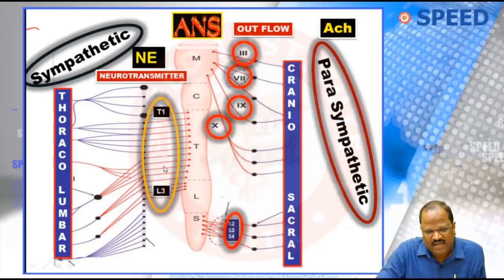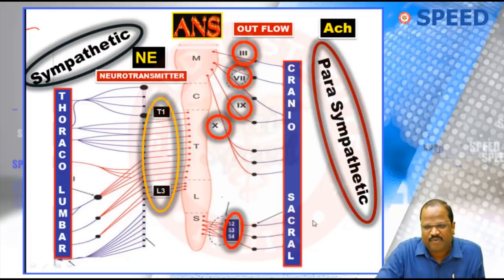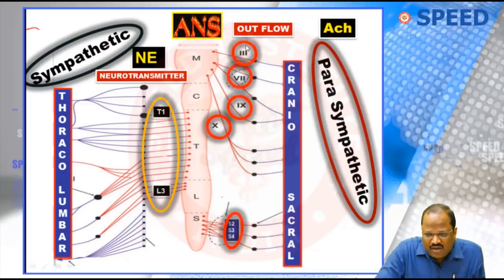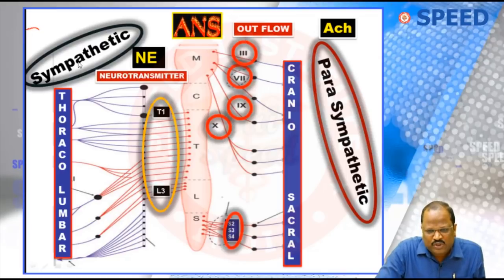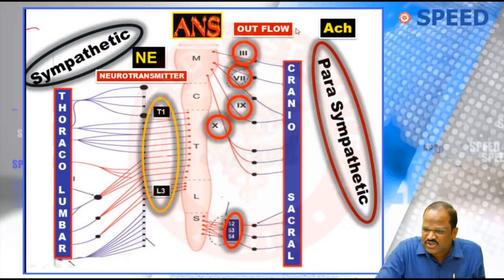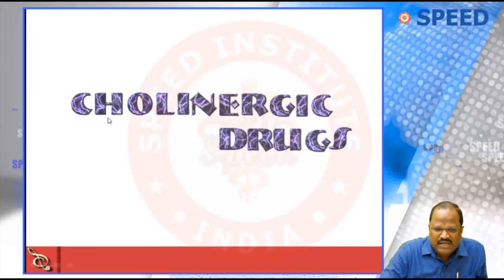The take-home message from this: the most important question — what are all the cranial nerves having parasympathetic activity? 3, 7, 9, and 10. Very important. Once you know this much, the next important point: we know acetylcholine is the neurotransmitter of the parasympathetic system, so today we are going to discuss my first topic called cholinergic drugs.